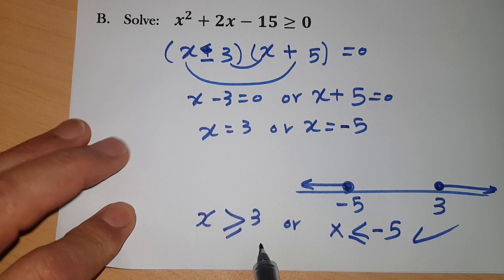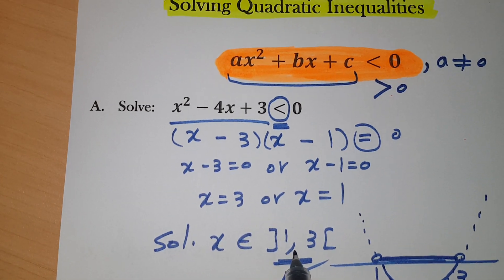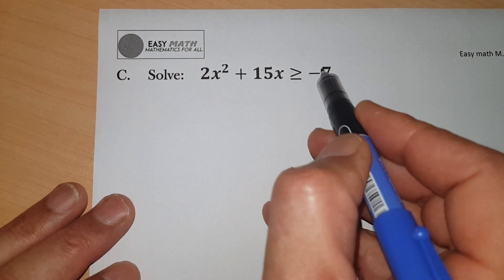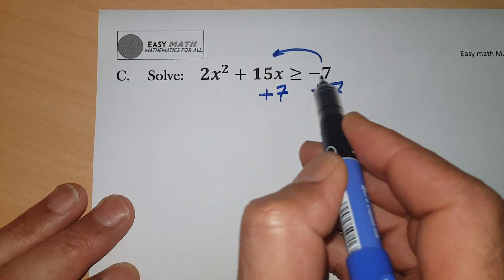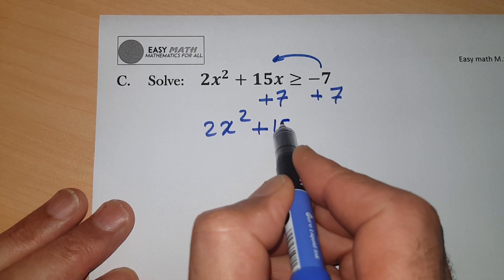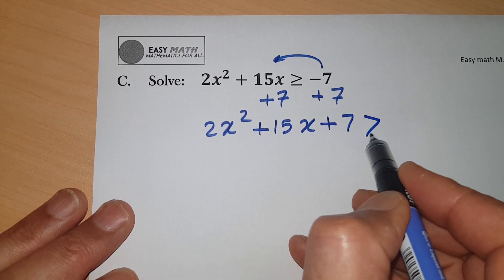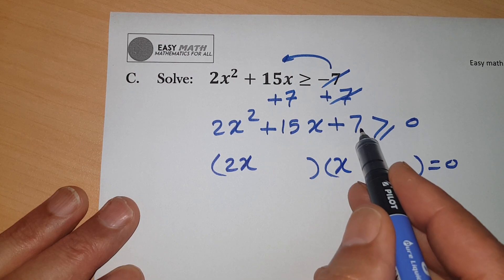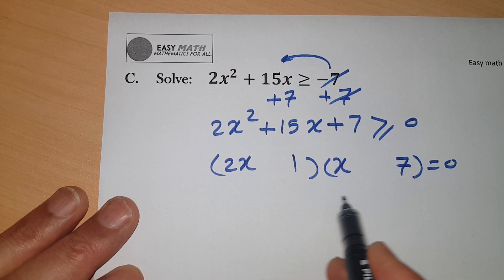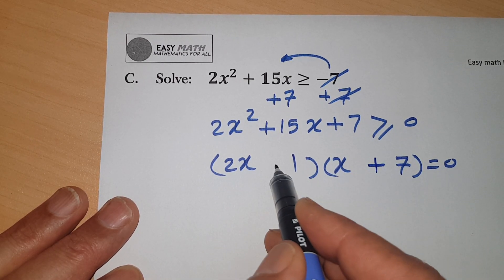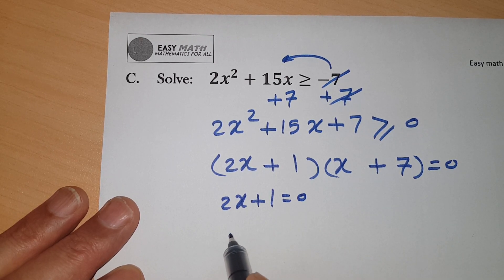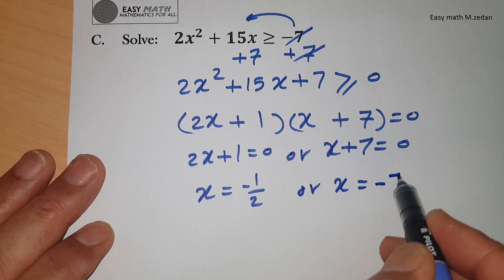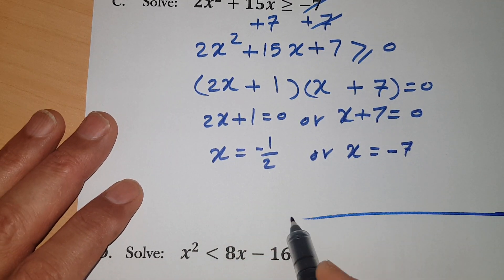Next: 2x² + 15x ≥ -7. Bring -7 to the left by adding 7 to each side: 2x² + 15x + 7 ≥ 0. Factorize and make it equal zero. 7 is 1 times 7; to get 15: 2x times 7 = 14, plus 1 = 15 — all positive. So (2x + 1)(x + 7) = 0, giving x = -½ or x = -7.